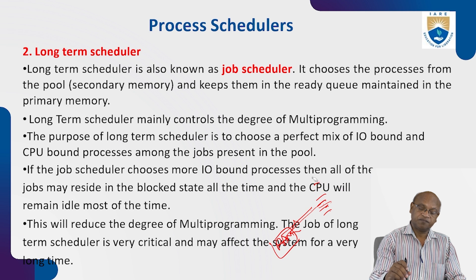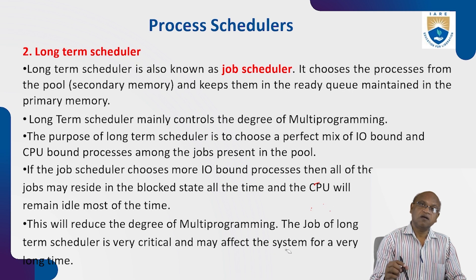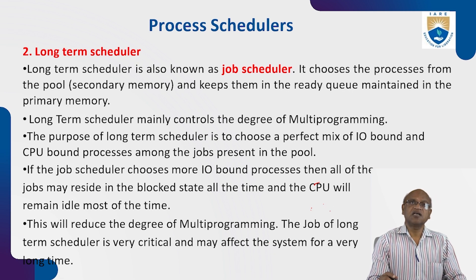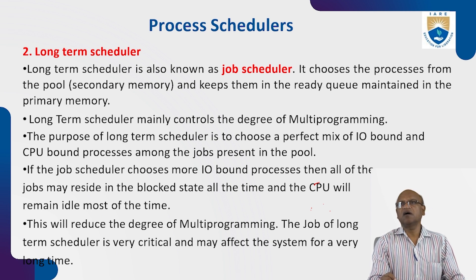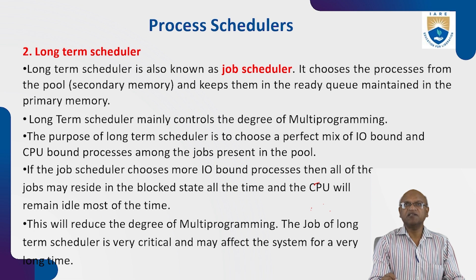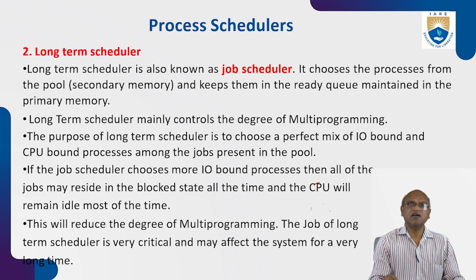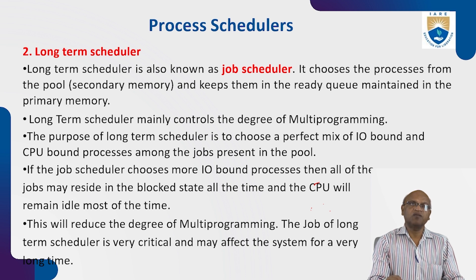The long-term scheduler chooses processes from the hard disk — secondary memory — and keeps them in the ready queue maintained in the primary memory (RAM). Bringing programs from the hard disk to RAM is the responsibility of the long-term scheduler. It mainly controls the degree of multiprogramming — deciding which programs among many available in the hard disk should be brought into the RAM for execution.